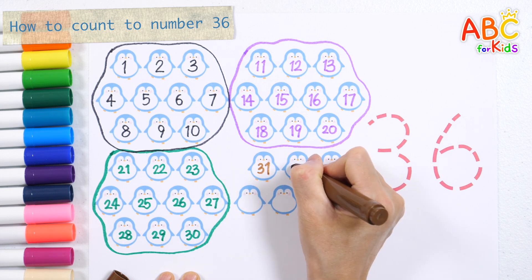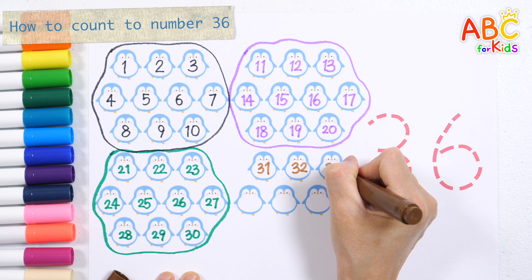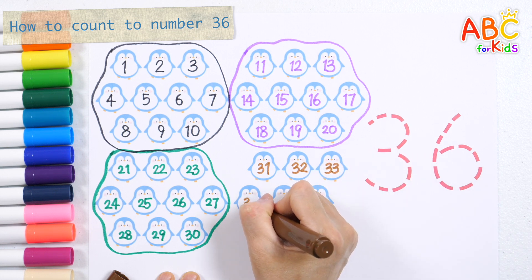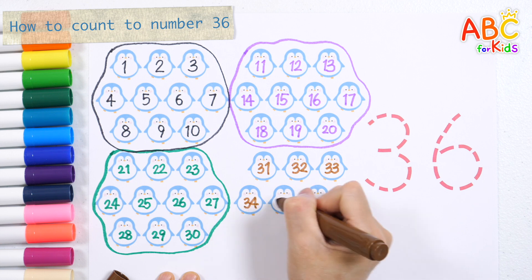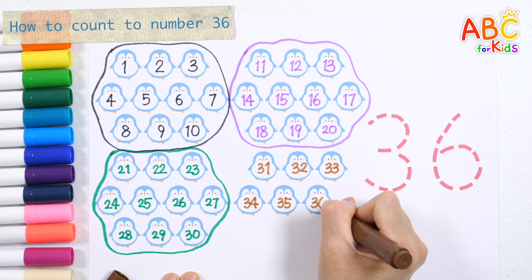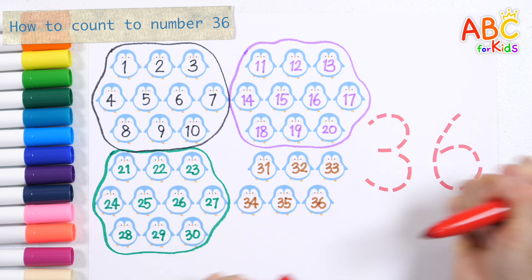Thirty-one. Thirty-two. Thirty-three. Thirty-four. Thirty-five. Thirty-six. There are thirty-six penguins in total.